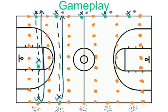Once they knock their cone down they will pick up a noodle slice and sprint back to the other side and place it in their basket. Then go again, or go to the back of the line if there is more than one student per line.